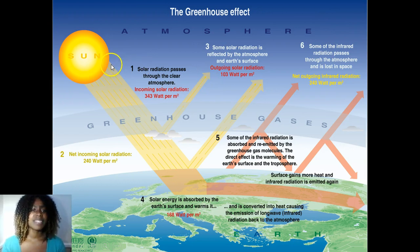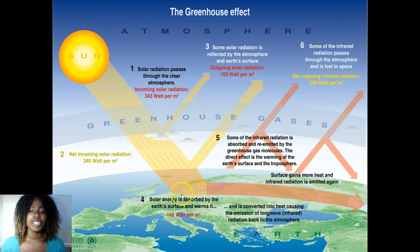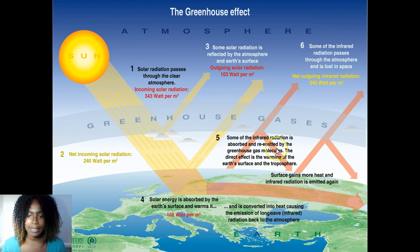Back to this diagram: the sun releases solar radiation which passes through the atmosphere. Some of the radiation is reflected by the atmosphere and by the earth's surface. Some of the solar radiation is absorbed by the earth's surface and warms it. The earth converts this energy into heat, causing emission of long wave radiation back into the atmosphere. Some of the infrared radiation is absorbed and re-emitted by the greenhouse gas molecules, which causes the earth's surface and the troposphere to heat up. The surface gains more and more heat and more infrared is emitted again.